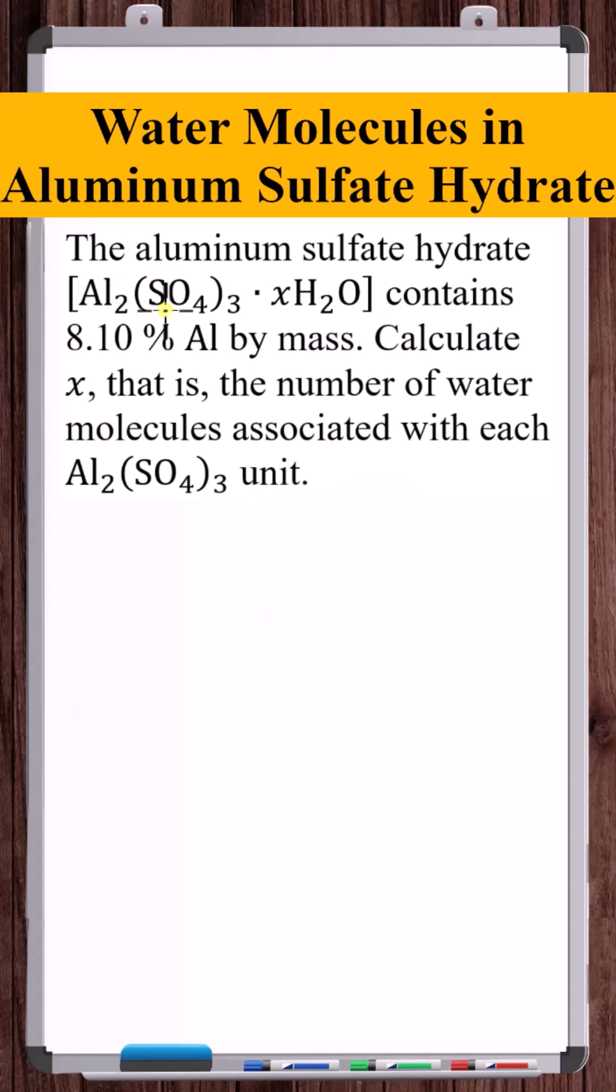Okay, so let's start off by adding up all of the masses of the atoms associated with each one of these. Not molecules here, we would just call these units. This is an ionic compound with water molecules attached.